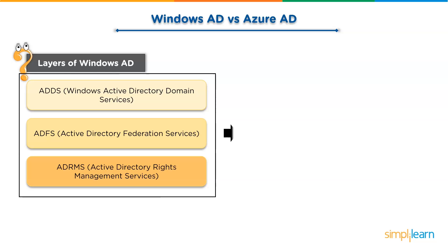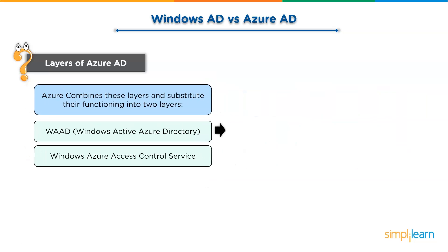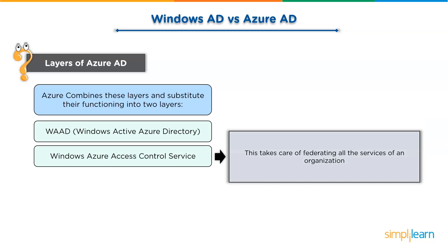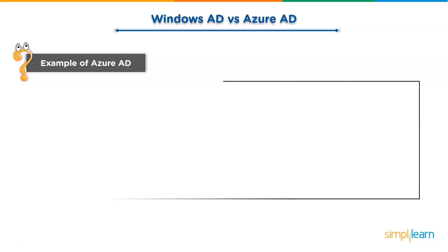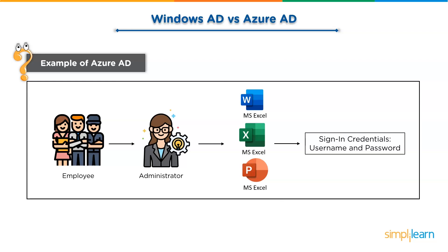But Azure Active Directory actually combines these layers and makes the whole process much easier and hassle-free. Azure AD combines these layers into two layers: WAAD, Windows Azure Active Directory, and Windows Azure Access Control Service. Windows Azure Active Directory combines all the problems revolving around identification management, and Windows Azure Access Control Service takes care of federating all the services of an organization. For example, when an employee joins the premises of an organization, the administrator guides them towards signing in to particular services they use and then gives access to it, and the employees can access these services through their credentials like username and password.